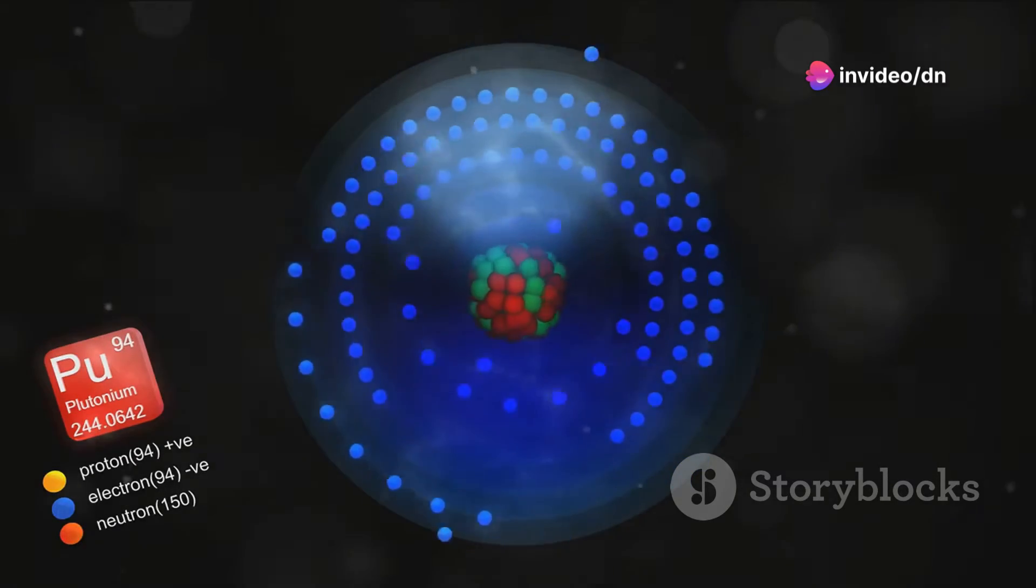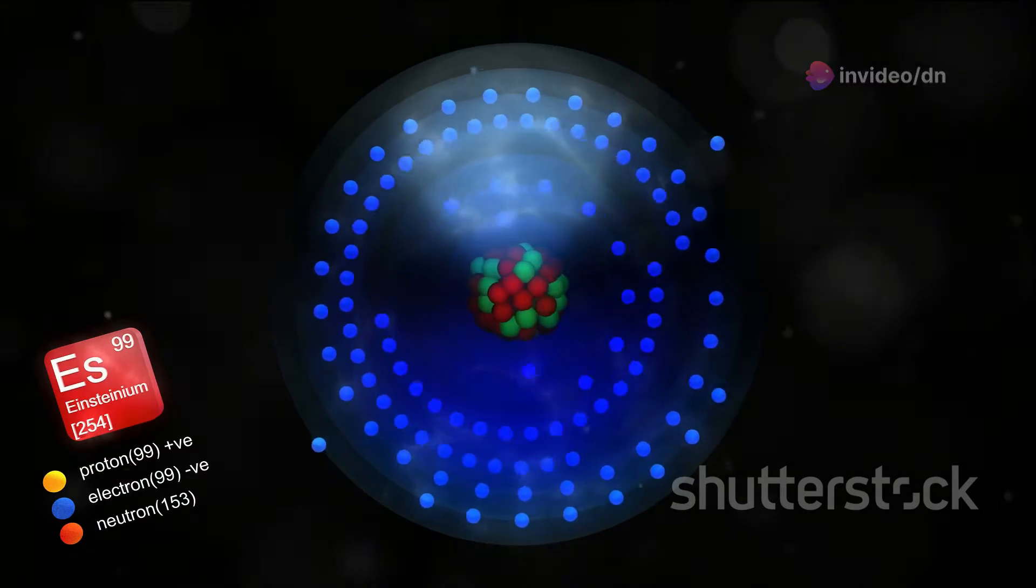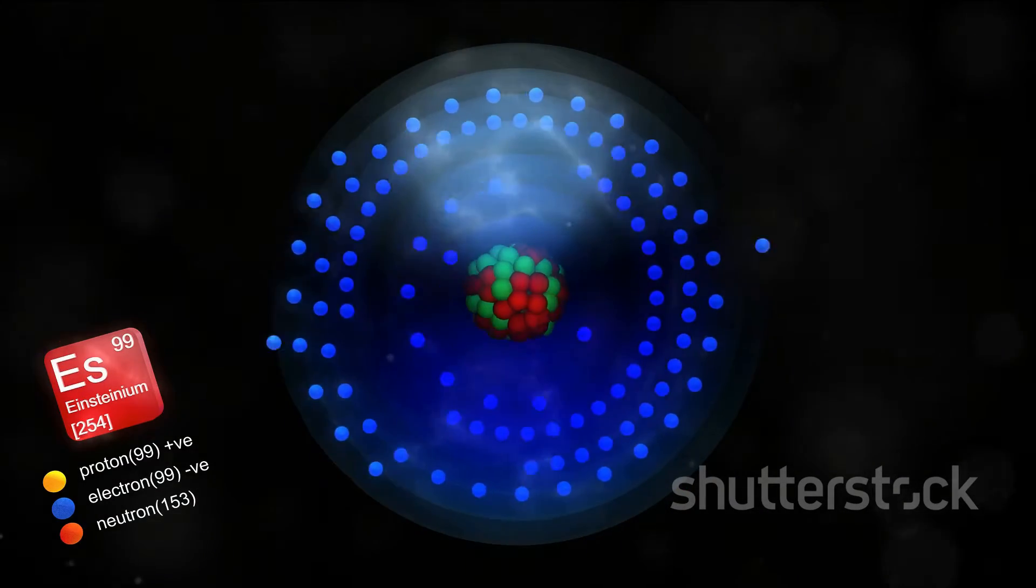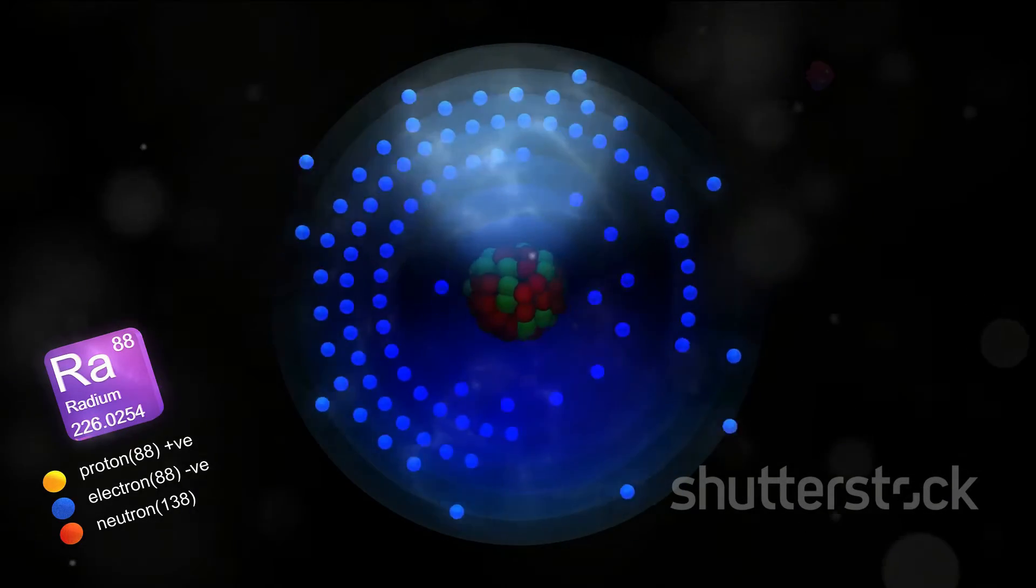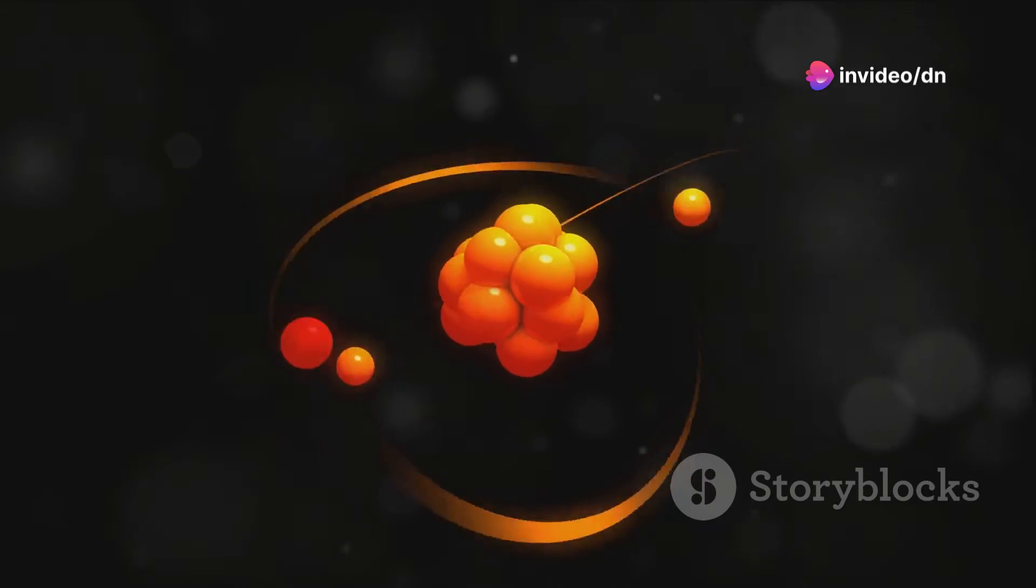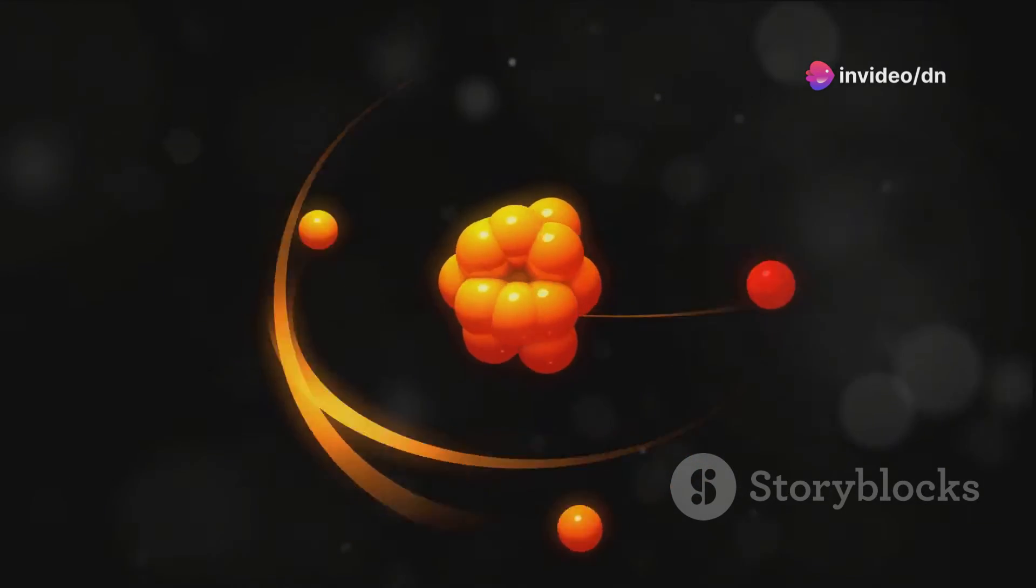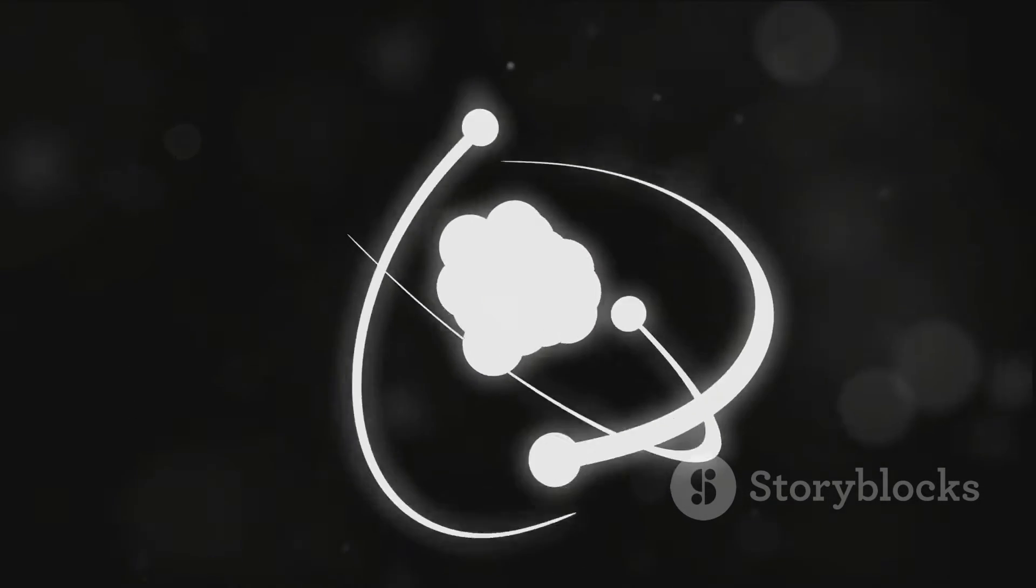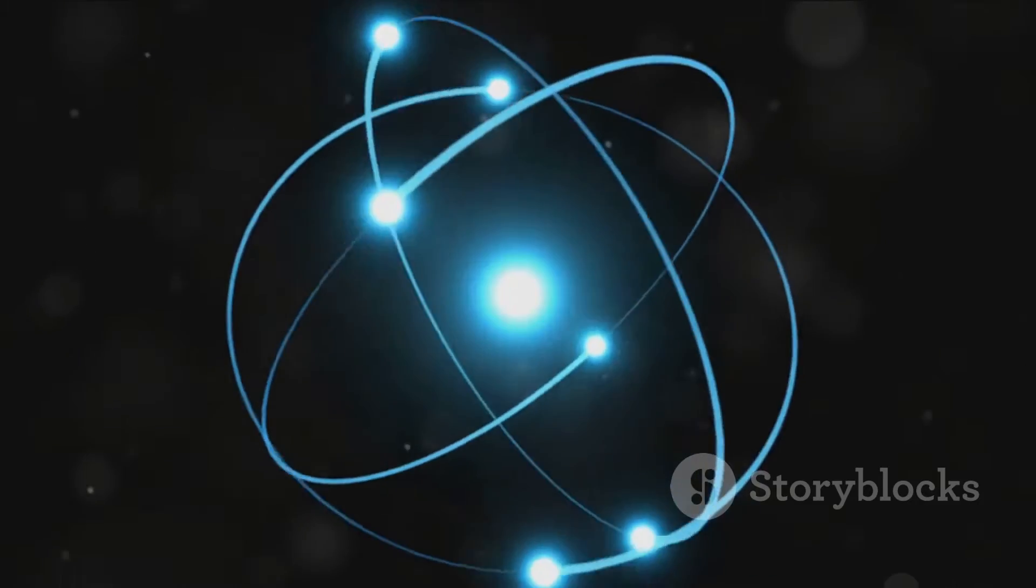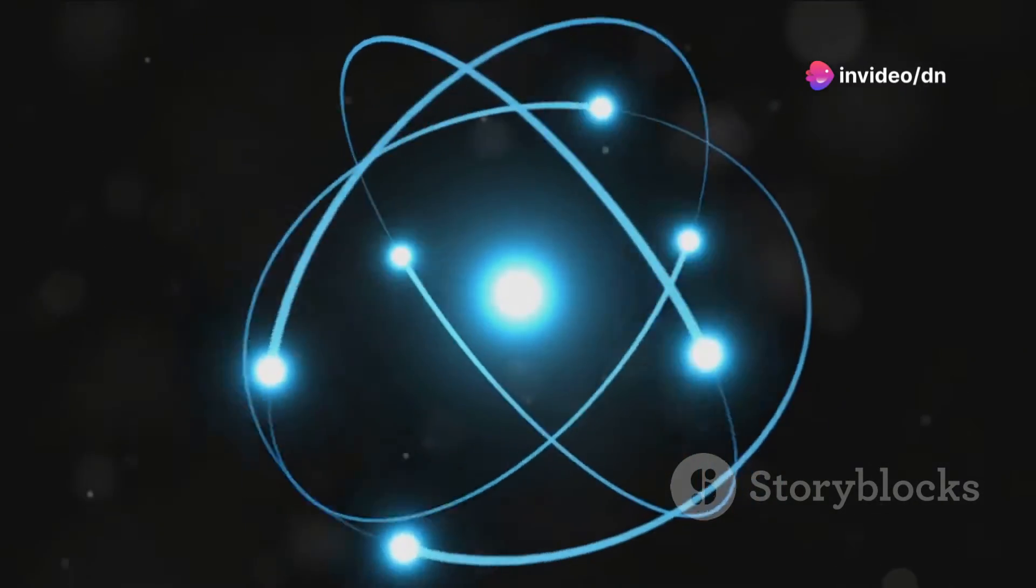But how do we know if we've successfully created a new super-heavy element like ununenium? That's where decay and detection processes come into play. Super-heavy nuclei primarily decay through two processes: alpha decay and spontaneous fission. In alpha decay, the nucleus emits an alpha particle, which is essentially a helium nucleus. On the other hand, spontaneous fission involves the nucleus splitting into two smaller nuclei.